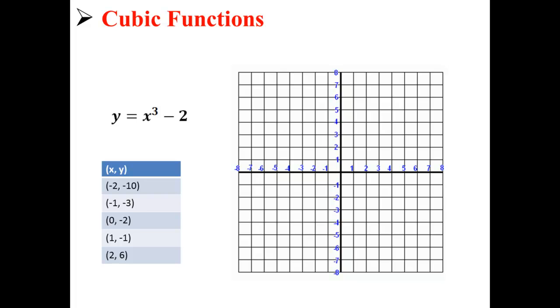Now that we have our five ordered pairs, we can graph them. Here I plotted our five points on the graph and connected them. Now we have our completed graph of our cubic function.